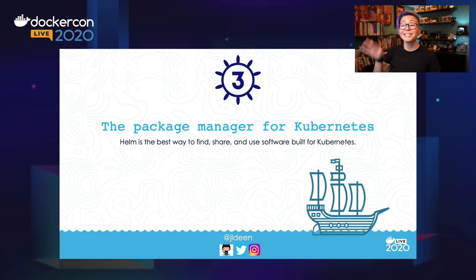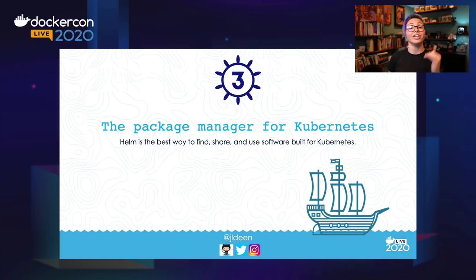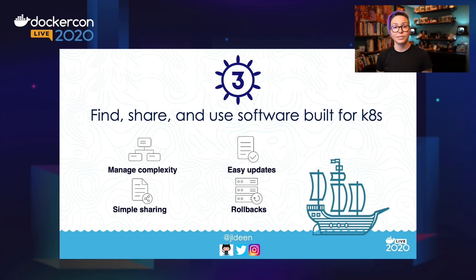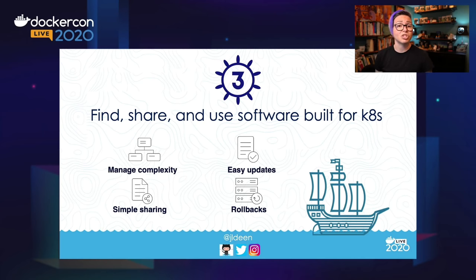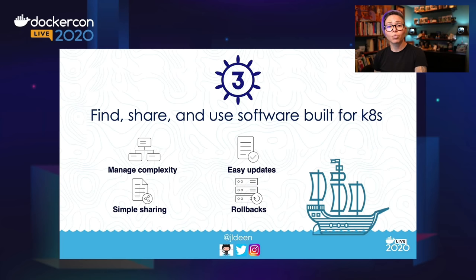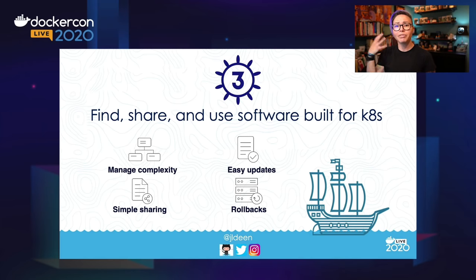Helm is the de facto package manager for Kubernetes. It is the absolute best way to find, share, and use software that is specifically built for Kubernetes. It helps you manage complexity, do easy updates. You can very simply share your charts, have chart dependencies, and even take advantage of the Helm rollback command to roll back to previous releases. A lot of these things, if you've already been using Helm for a while, you're probably familiar with.